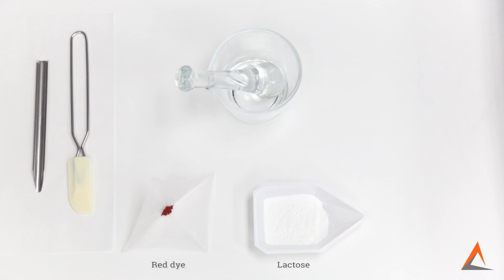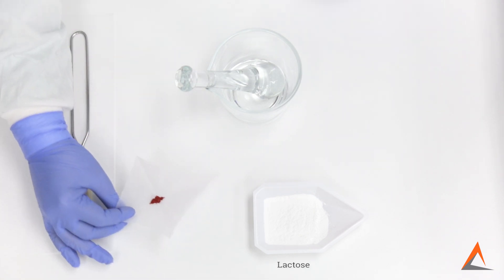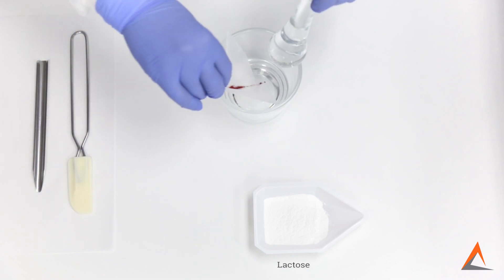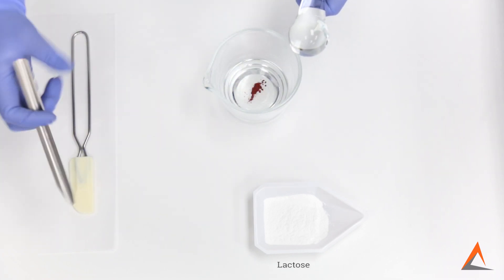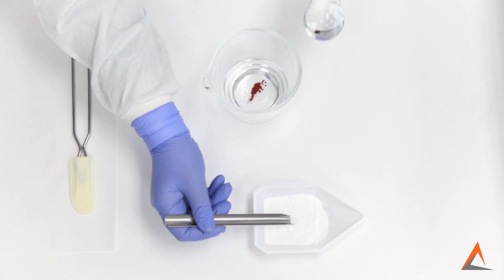We'll now use geometric dilution to combine these two powders in order to obtain a homogeneous mixture. We'll start by adding the ingredient of the smallest quantity into our mortar. Next, we add an approximately equal amount of the powder with the larger quantity into the mortar.